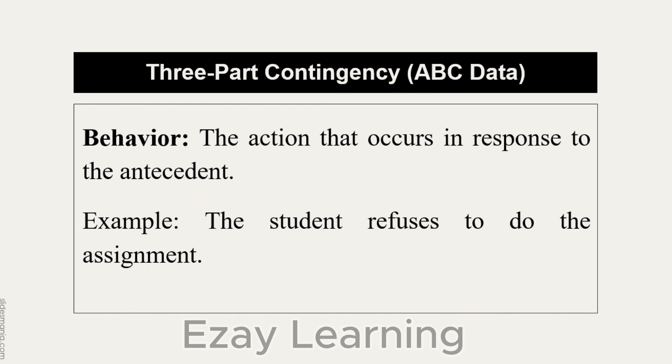Now what will be the behavior? Behavior will be the action that occurs in response to the antecedent, which might be the trigger as well. So the antecedent happened, and the behavior will probably be the reaction — the action in response to the antecedent. Example: the student refuses to do the assignment. Consider this as we are collecting the ABC data — we are writing that the behavior is the refusal of the student to do the assignment.